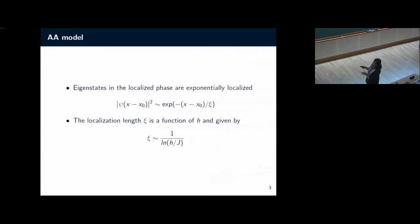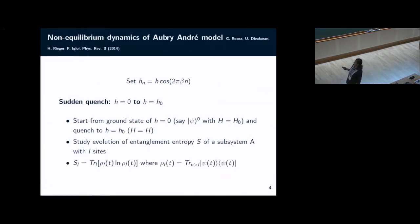In the localized phase, which happens when the magnitude of h is greater than j, the states have this exponential dependence where the ξ, the so-called localization length of this eigenstate, goes as 1 by log of h by j. So it diverges when h is equal to j, which is the critical point of this Hamiltonian.